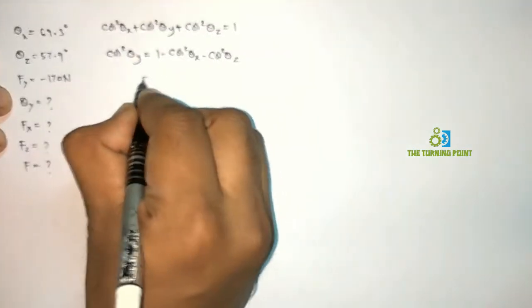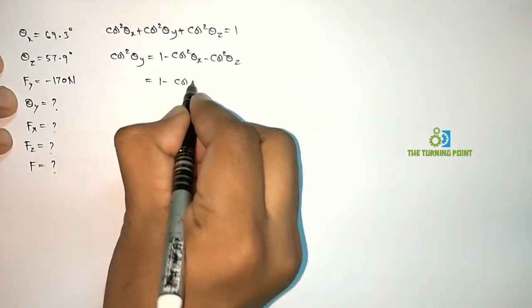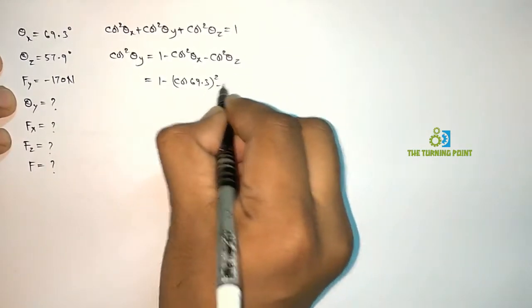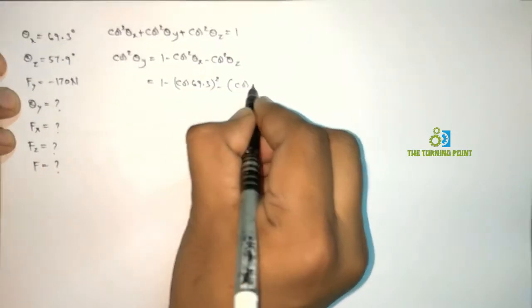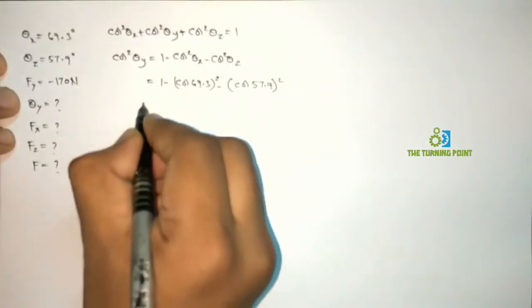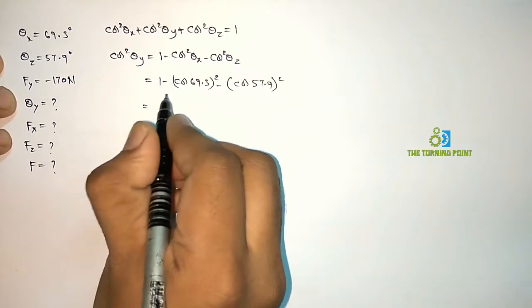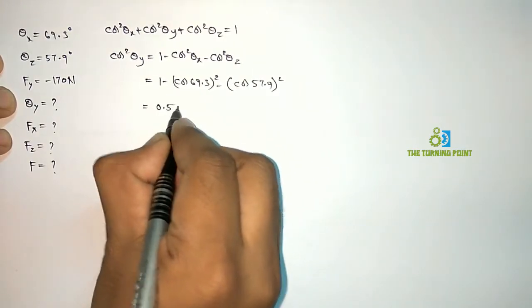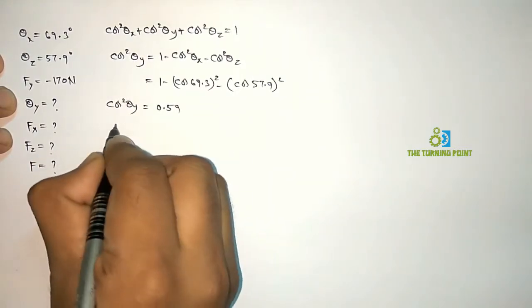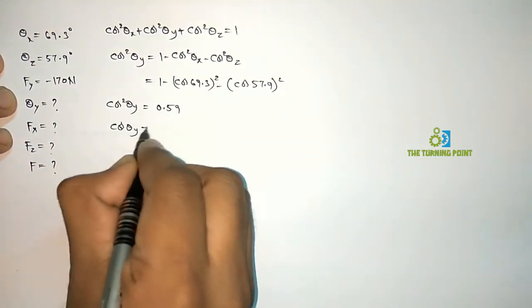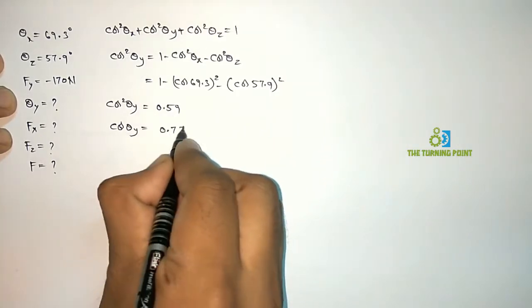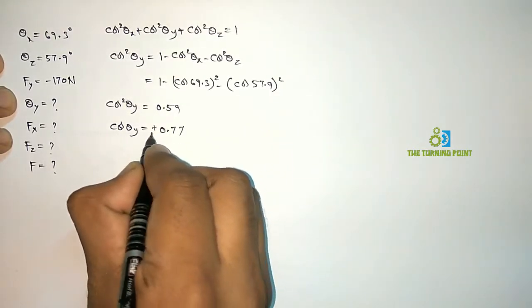Here this is equal to 1 minus Cos square Theta z is 57.9 whole square. So if you simplify it, you will get 0.59. So this is Cos square Theta y. So I want to find Cos theta y. Cos theta y is square root of 0.59. So I will get 0.77. So it may be positive or negative.